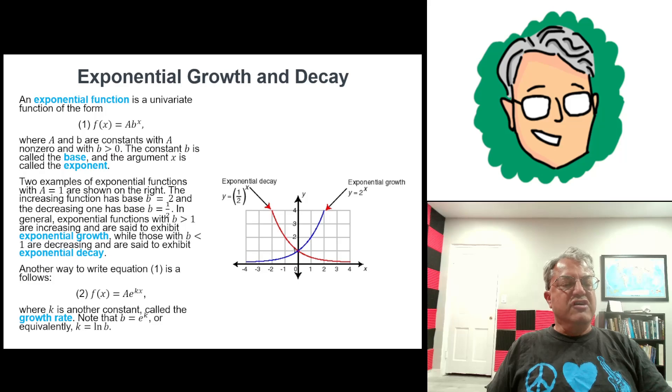So for the example shown here, the base for the exponential growth is 2, and for the exponential decay is 1.5. And there's another way we can write these exponential functions. We can write them in terms of e, the base of natural logarithms, or Euler's constant, if you like, which is about 2.718.